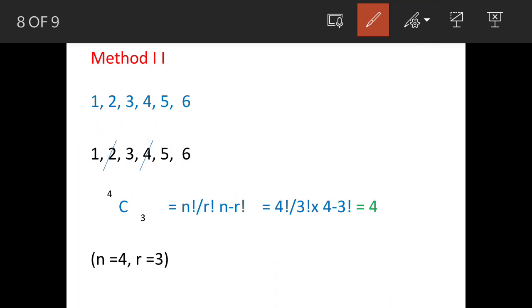So the formula becomes 4C3 equals factorial arrangements. Factorial 4 divided by factorial 3 and again divided by factorial n minus r, that means 4 minus 3. So if you solve this, this becomes 4.